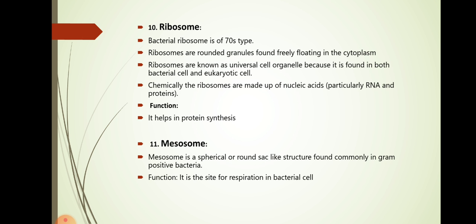The next structure is mesosome. It is a spherical or round sac-like structure found commonly in the gram-positive bacteria. Its function is it acts as a site for respiration in bacterial cells.